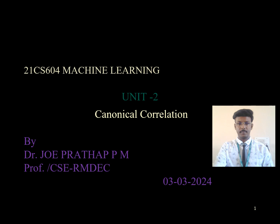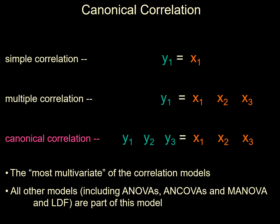Before going into canonical correlation: simple correlation means there is no multiple variables, just x related to y. Multiple correlation means y is correlated with multiple x variables. Whereas in true canonical correlation we have multiple variables on both sides — y1, y2, y3 and x1, x2, x3 — a set of variables correlated with another set of variables. This is the most multivariate of the correlation models.